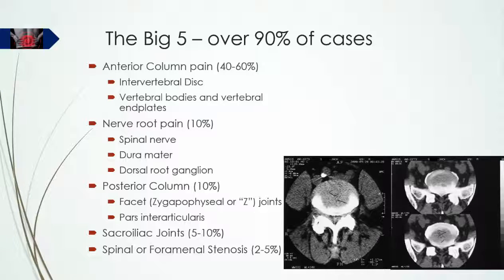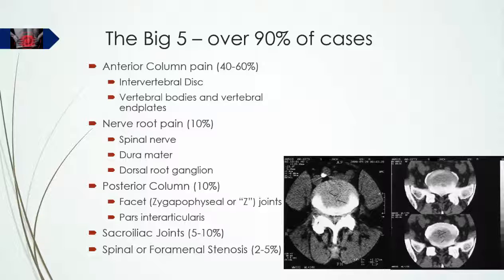Anterior column pain is covered in detail in section 3 of this course. Nerve root and dural pain is covered in section 4. The sacroiliac joint and related problems of pelvic instability is covered in section 5. Posterior column pain is covered in section 7, and spinal stenosis and other less common conditions are covered in sections 8 and 9. Knowing that these conditions exist and that it is possible to diagnose them is a first step. The next step is to consider the prevalence of these major subgroups, which we will now discuss and explain why it is important.